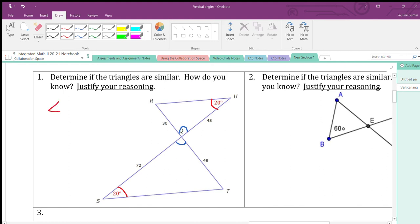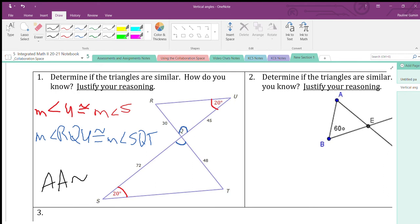So, let's write that down. Let's justify our reasoning. First, I'm going to write down the easiest one. The measure of angle U is congruent to the measure of angle S. Let's do the same thing for Q. Now, Q exists in both triangles, so I'm going to have to name it a little different. The measure of angle RQU is congruent to the measure of angle SQT. So they have an angle-angle similarity.